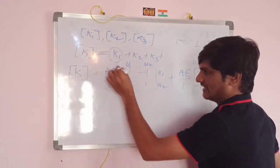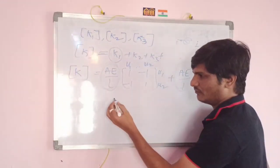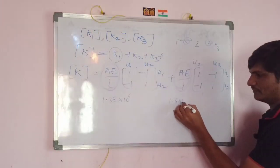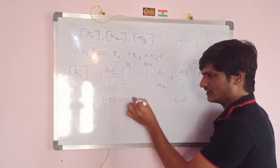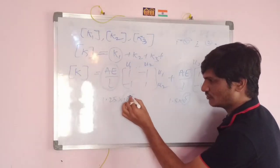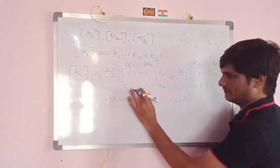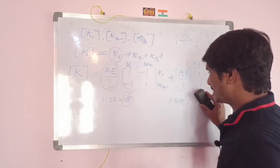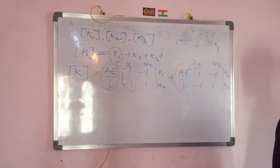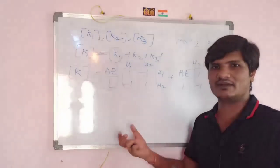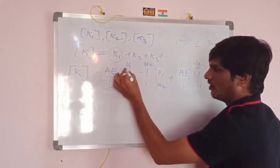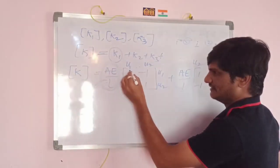When assembling, pay attention to the outside multiplier values. For example, if one element gives 1.25×10^6 and another gives 1.8×10^5, convert both to the same power of 10 — say 10^5 — so the outside values match. Then place the remaining numerical values inside the matrix. This keeps the assembly process clean and avoids complications.